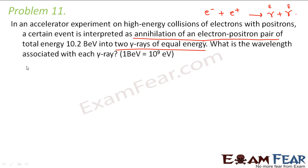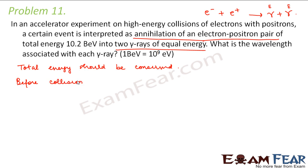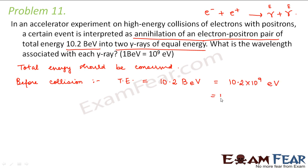The fundamental principle we apply here is that total energy is conserved in a collision. So the total energy before collision should equal the total energy after collision. The total energy before collision is 10.2 BeV. Since 1 billion electron volt is 10⁹ electron volts, this is 10.2 × 10⁹ electron volts, which comes out to be 10.2 × 10⁹ × 1.6 × 10⁻¹⁹ joules.